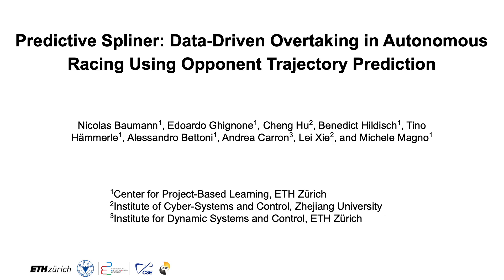This paper presents Predictive Spliner, a data-driven approach to leverage opponent knowledge for overtaking maneuvers in high performance autonomous racing.